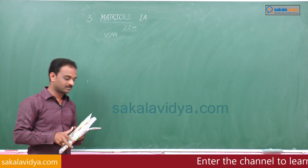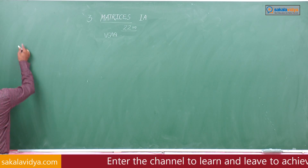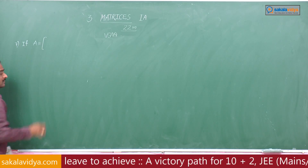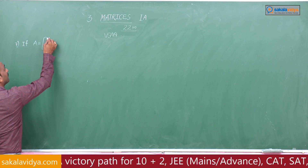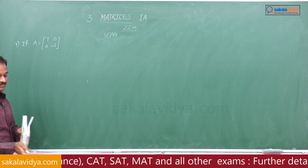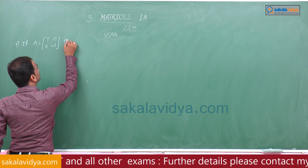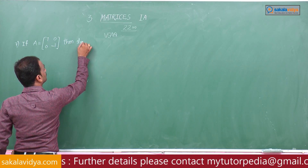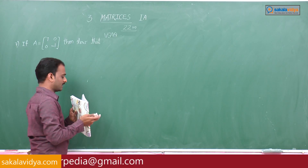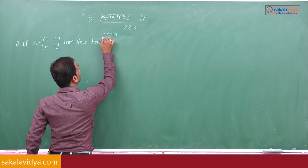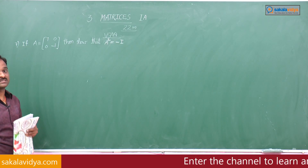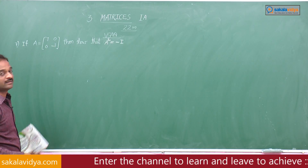Next problem number 7: if matrix A equals [[I, 0], [0, -I]], then show that A squared equals minus capital I, where capital I represents the identity matrix.